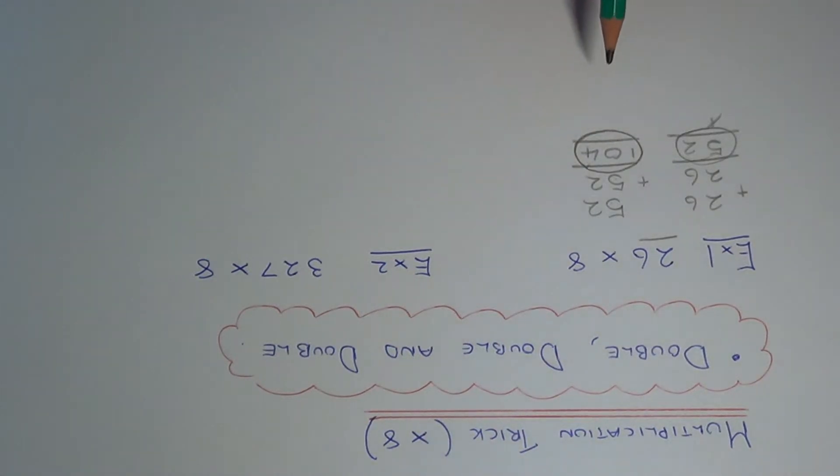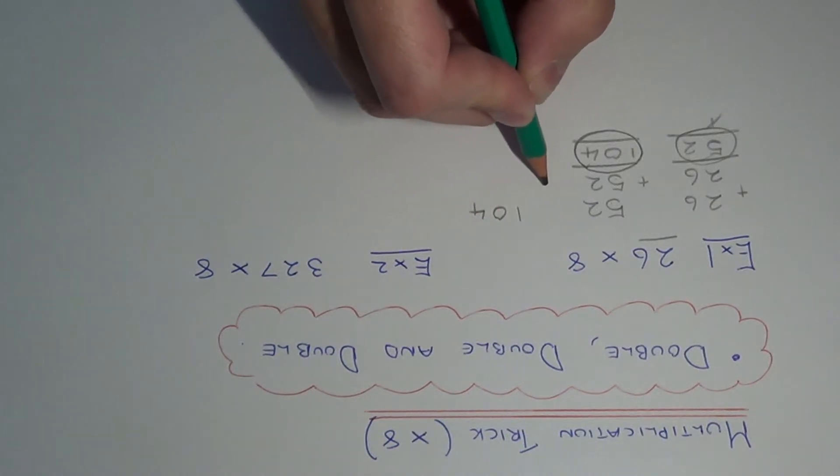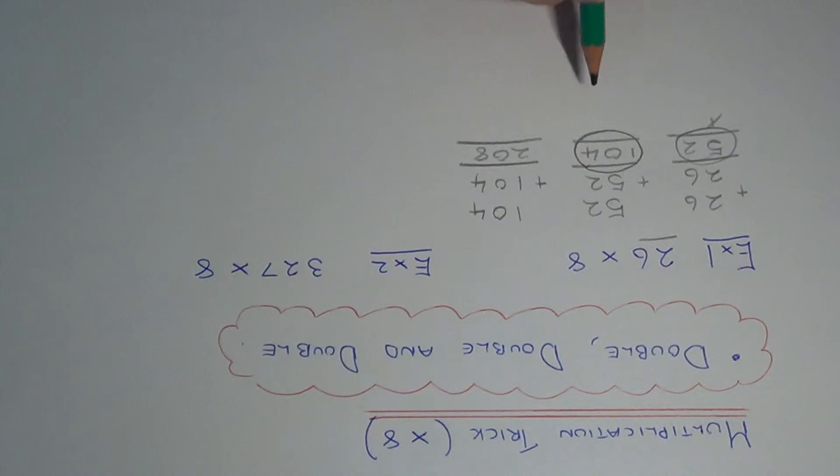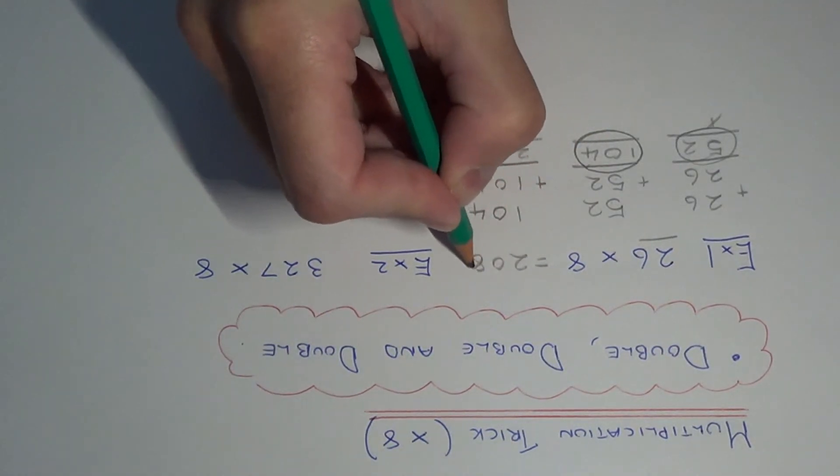And we just need to now double this number for a third time, so we need to do 104 add 104. 4 add 4 is 8, 0 add 0 is 0, 1 add 1 is 2. So our final answer is 208.